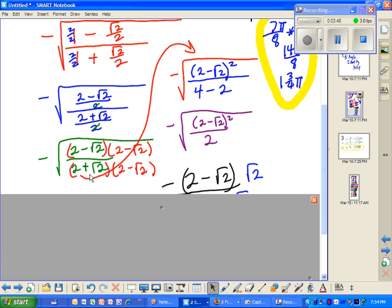So I end up getting here in purple, 2 minus square root of 2, and that's all squared, over 2. Well, the square root of the top becomes 2 minus square root of 2. I carry that negative.